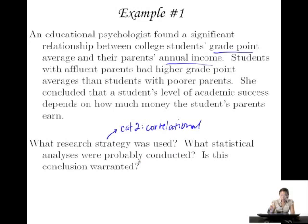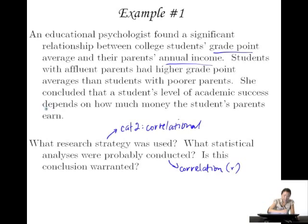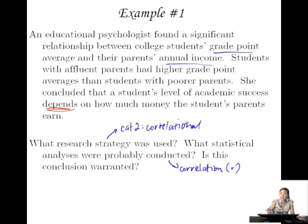What statistical analyses were probably conducted? This sounds like a positive relationship, so that seems like it's a correlation — something like R. Is this conclusion warranted? She says the academic success 'depends on' the money from their parents. 'Depends on' — that's a causal word. People won't always just say 'this causes this' directly; there are a lot of different ways of saying causes. Impacts, effects — 'depends on' is one of those code words for causality. In a correlational design, can you look at causality? No.